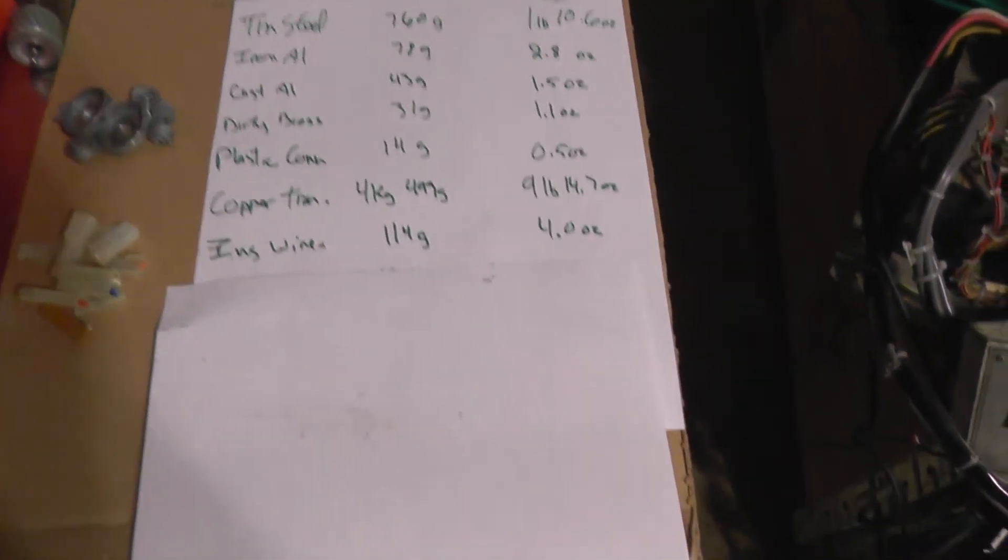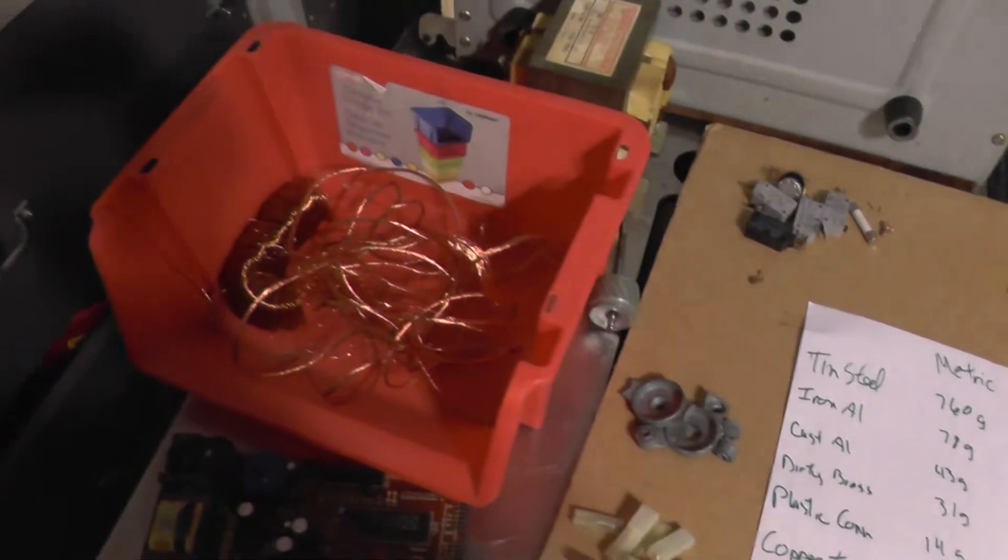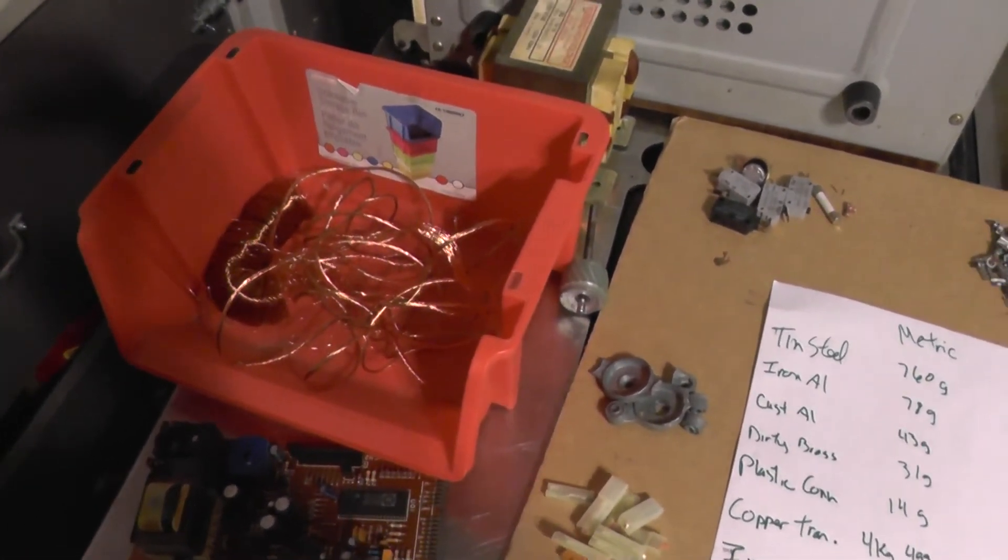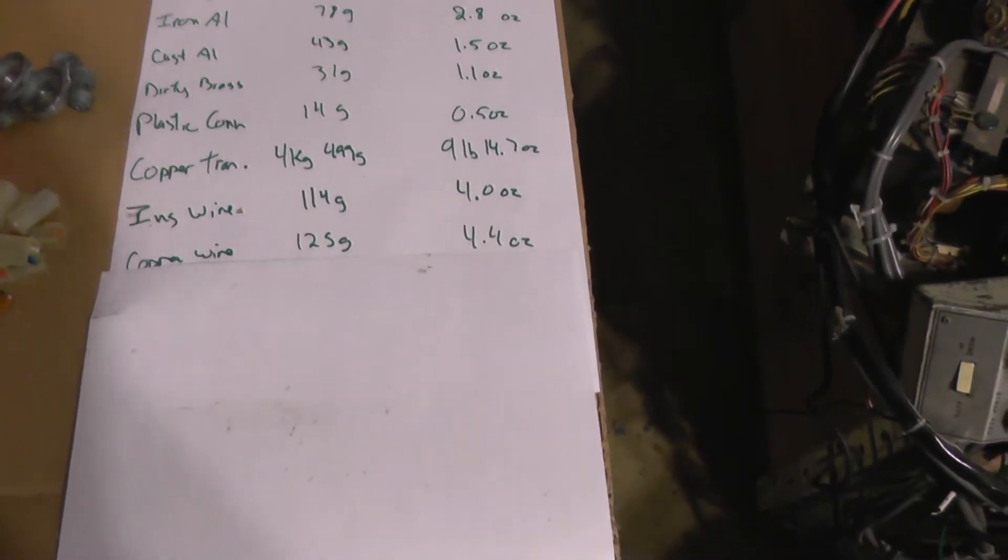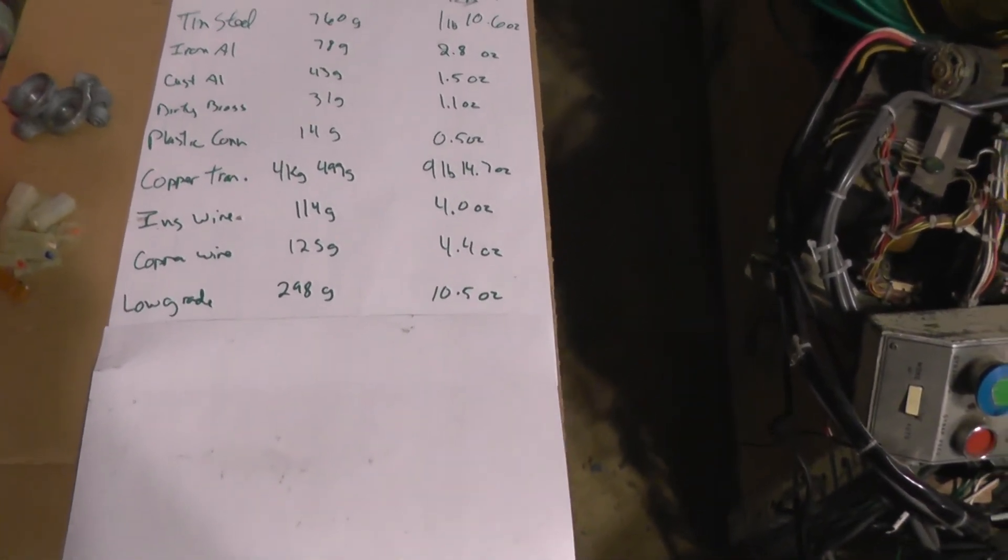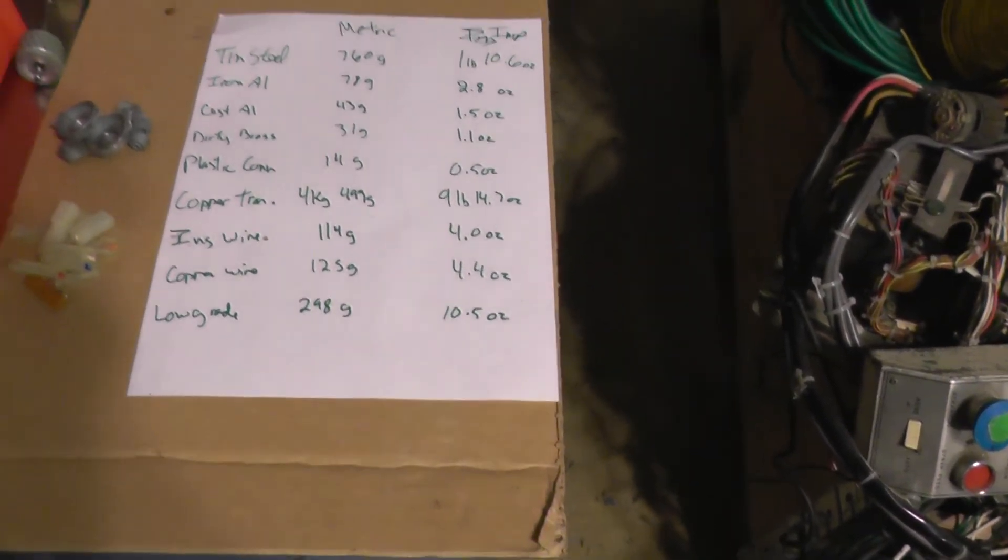The insulated wire came in at 114 grams, or 4 ounces. The stripped copper wire, which is from the power cord and the tiny fan motor, it came in at 125 grams, or 4.4 ounces. The low-grade board, just under 300 grams, or 10.5 ounces. And that's about it.